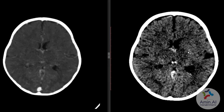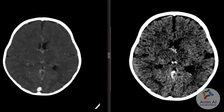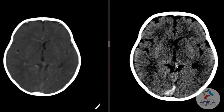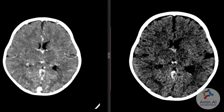Secondly, there are diffuse hyperdensities and edema in the thalamus and adjoining areas, which is due to thrombosis of the internal cerebral veins and all these venous channels. Sometimes post-contrast images are not sufficient, and in this case MR venography is advised.